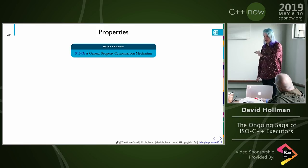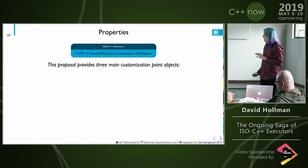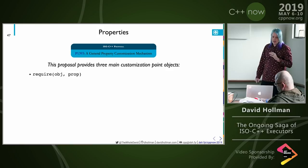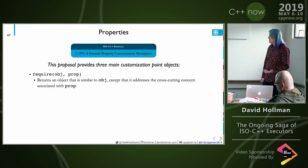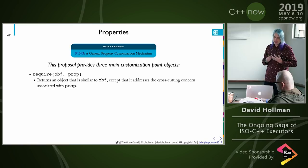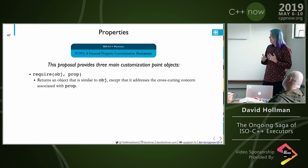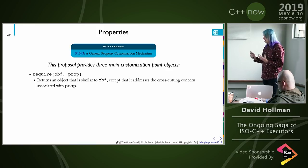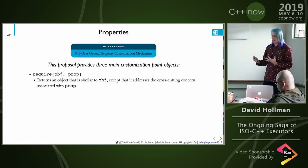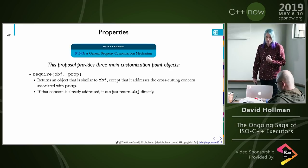The properties mechanism was extracted from P0443 much later, but the point it was introduced into the P0443 proposal was around this time. We provided three main customization point objects with different semantics. 'Require' returns an object similar to the first argument but addresses the cross-cutting concern associated with the property. If it's already addressed, it can return it directly — so if someone above you on the stack already set up a random access cache, there's no reason to do it again.